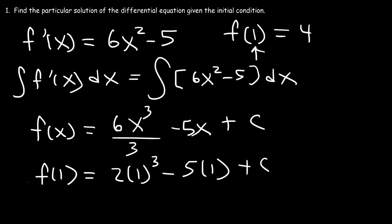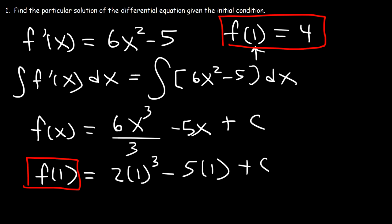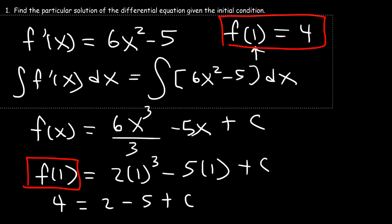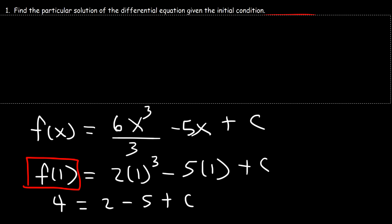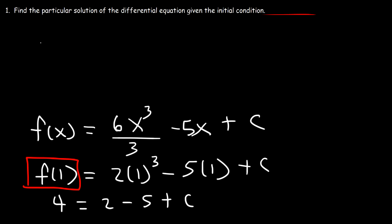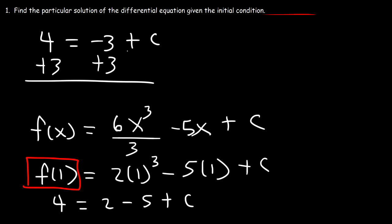Now let's replace f(1) with 4, because f(1) is equal to 4. So we have 4 is equal to 2 minus 5 plus c. 2 minus 5 is negative 3, and to solve for c we add 3 to both sides. 4 plus 3 is 7, so c is equal to 7.